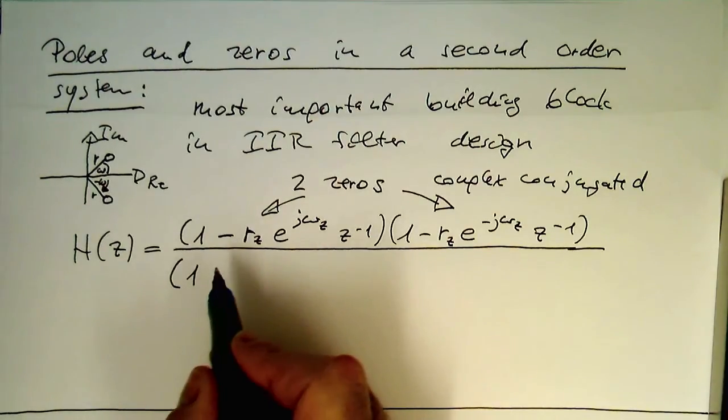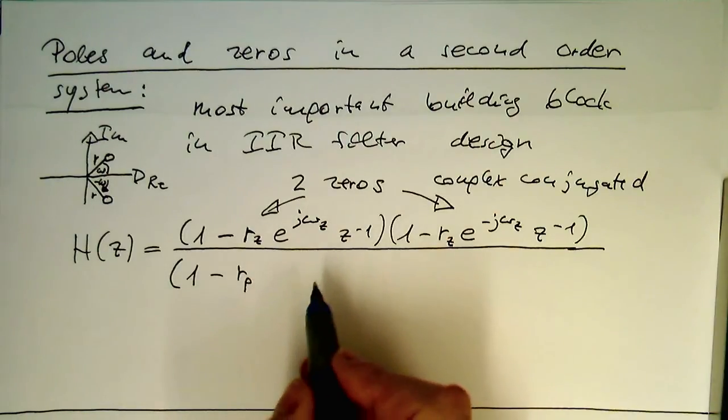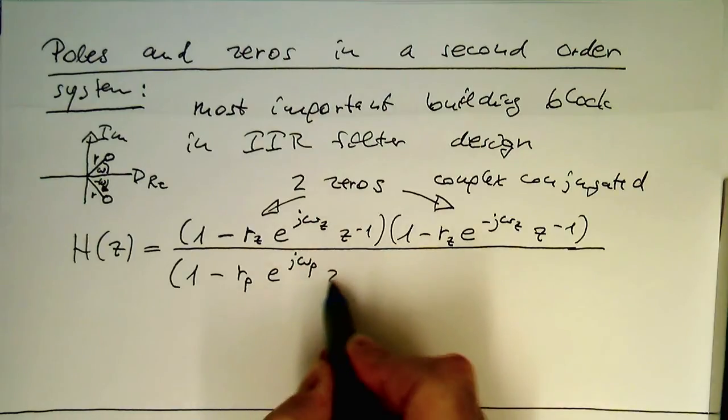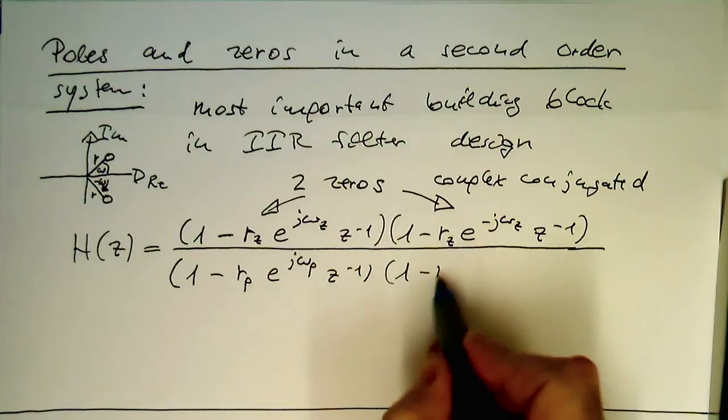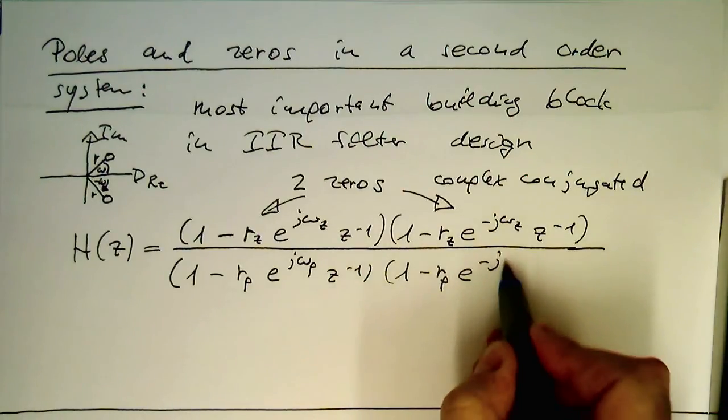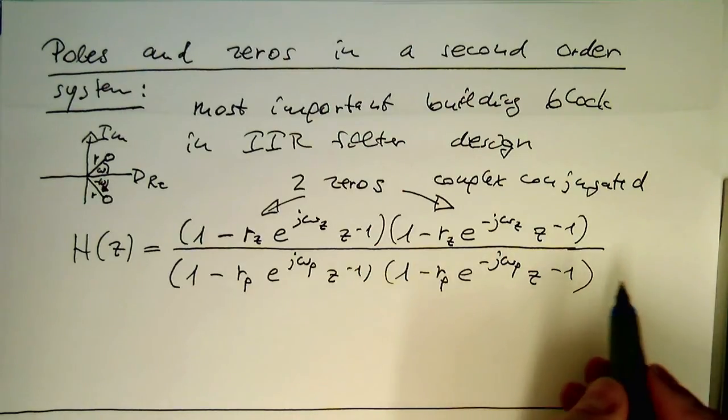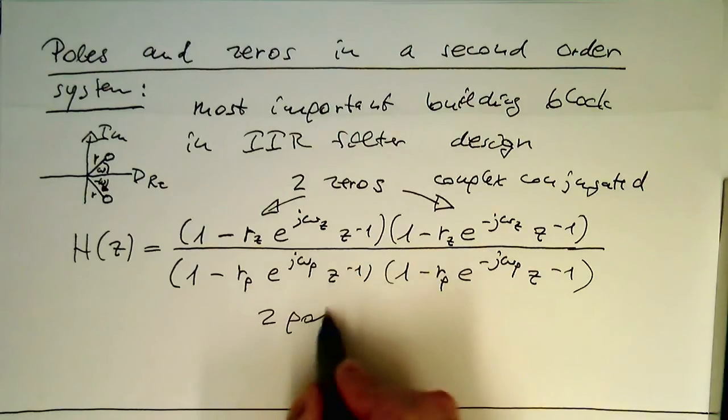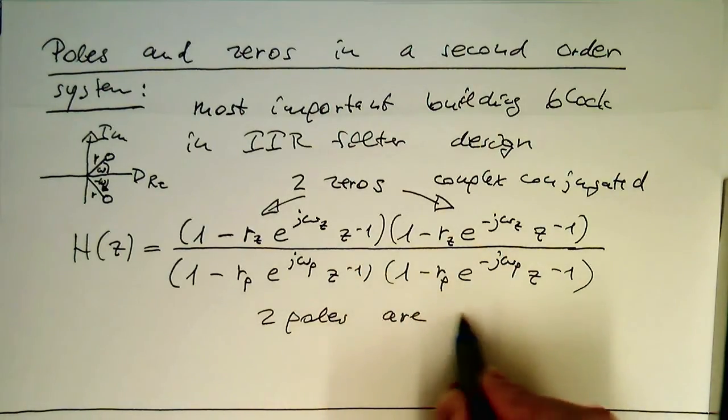And now what we do is in the denominator, we are defining two poles in the same way. (1 minus R_p e^(j omega_p) z^(-1)) times (1 minus R_p e^(-j omega_p) z^(-1)). So again, these two poles are complex conjugated.